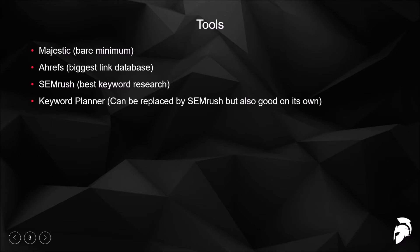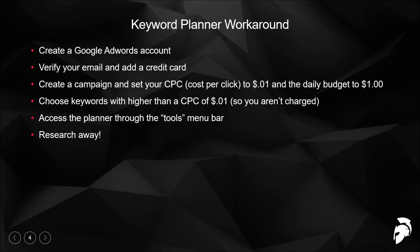Keyword Planner is from within AdWords and can be replaced by SEMrush, but it's also good on its own. You may have heard that Google has changed Keyword Planner to show ranges now — for example, searching 'Chicago lawyer' might say 1,000 to 10,000 searches per month. The workaround is to either have a paid campaign, or I'll show you a workaround we've figured out.